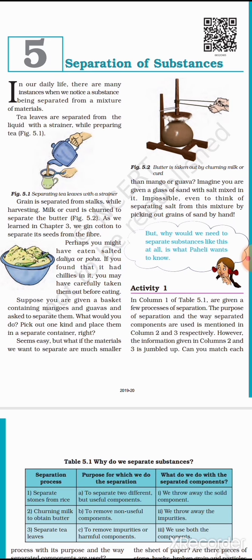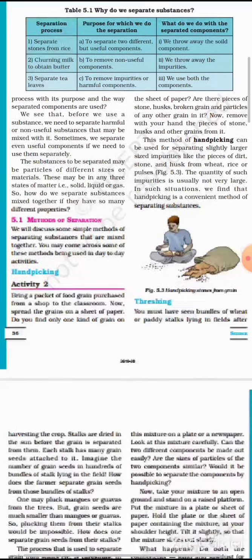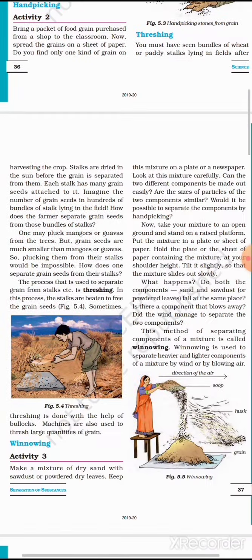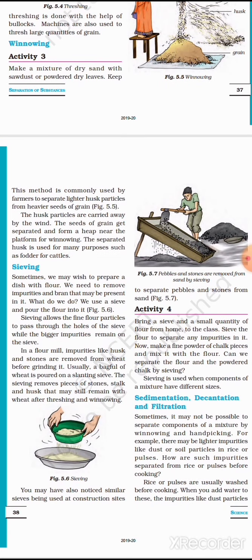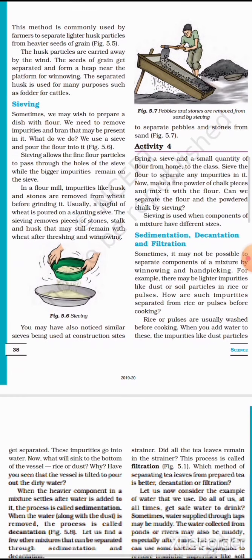In the last two classes we saw about what is meant by separation of substances and methods of separation that is hand picking, threshing, winnowing and sieving. After that we saw about sedimentation, decantation and filtration.